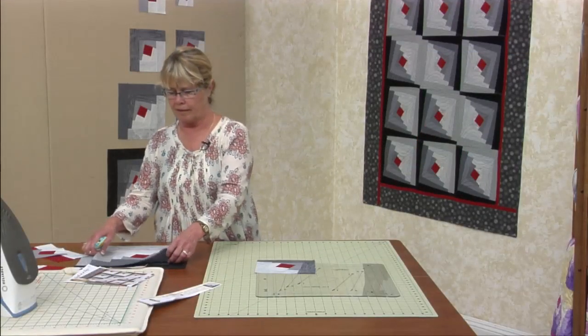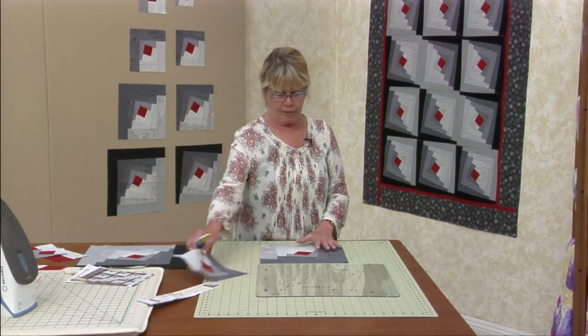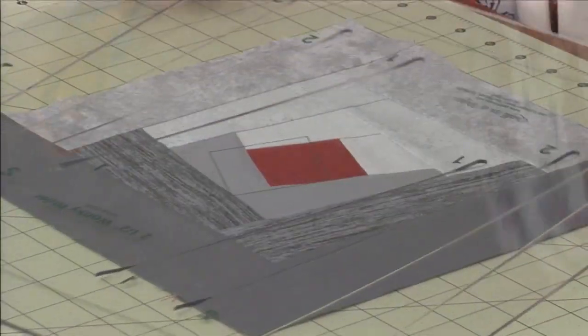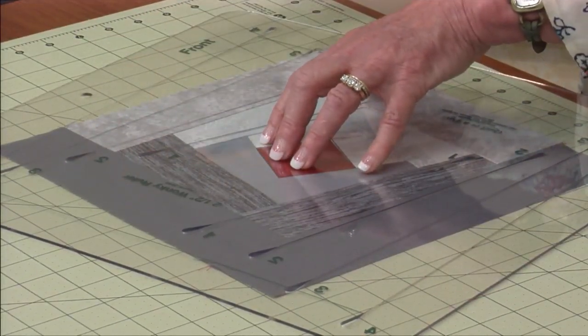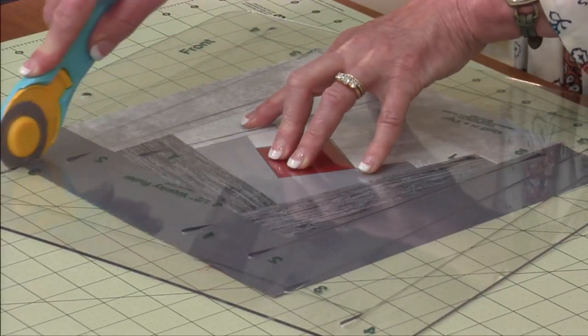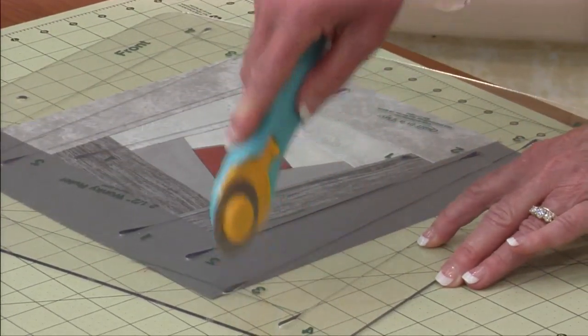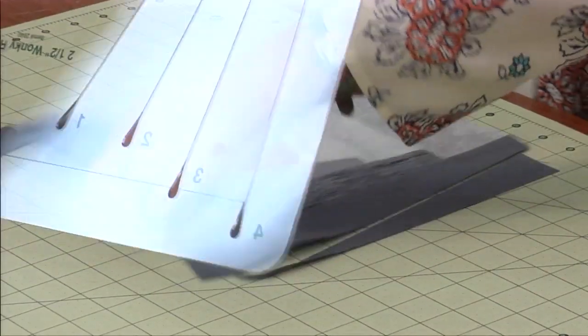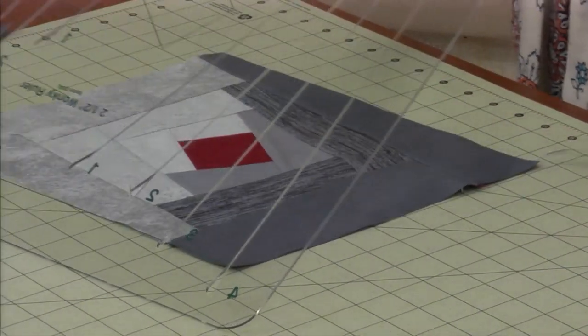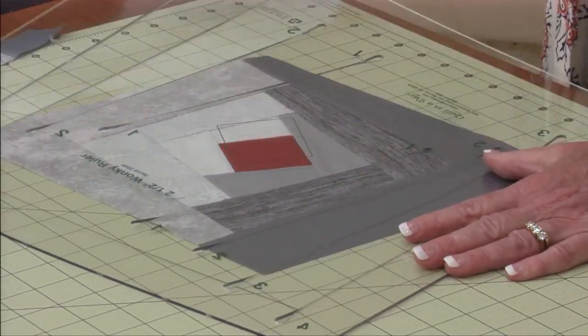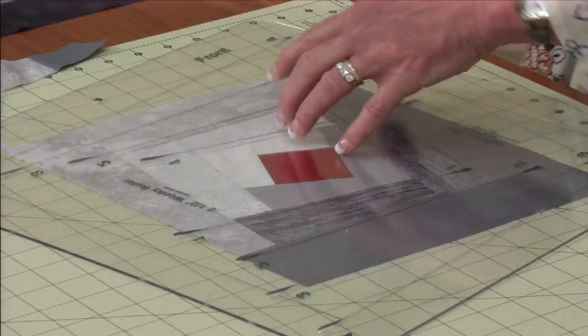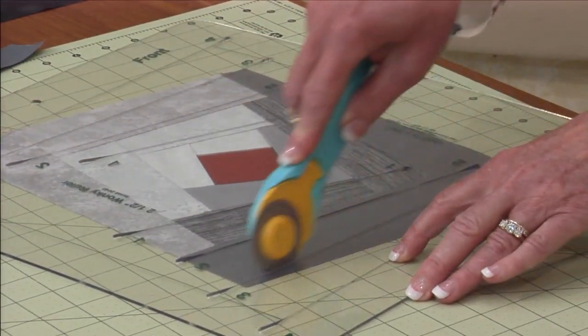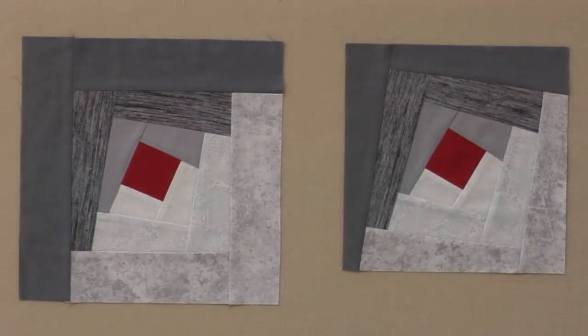Then we're going to continue on with round three and do the exact same thing but this time we're going to be using the number three slots. Three and three. Lift your ruler. Turn it 90 degrees. Place it back down centering up that red center and then we'll do round three and three and we only have one more round to do. This log cabin actually has four rounds.